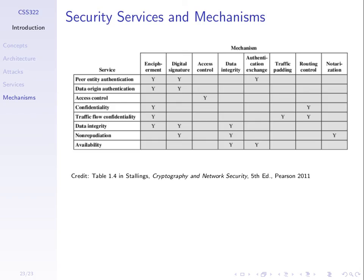Key points from this topic: CIA — confidentiality, integrity, availability. Attacks. Services. We haven't really got into the mechanisms yet — I will not ask you in the quiz what are all the mechanisms, but what are the services, what are the attacks, passive versus active. And these general concepts of confidentiality, integrity, and availability are important.